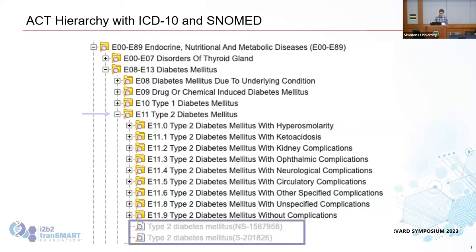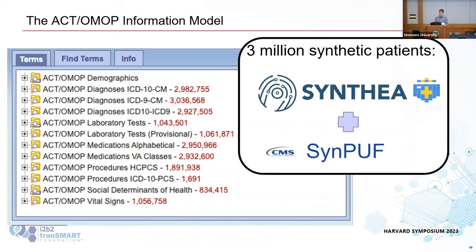This matches what everyone else is doing in an ACT site, so you have compatibility across the network. This will allow us to onboard sites that use the OMOP data model into ACT — there may already be one or two. We have a three-million patient synthetic data set that consultants created for us. It uses Synthea, an open source synthetic data generator, and SynPUFF, which is synthetic data from CMS that OHDSI provides. We extended this to be three million patients.